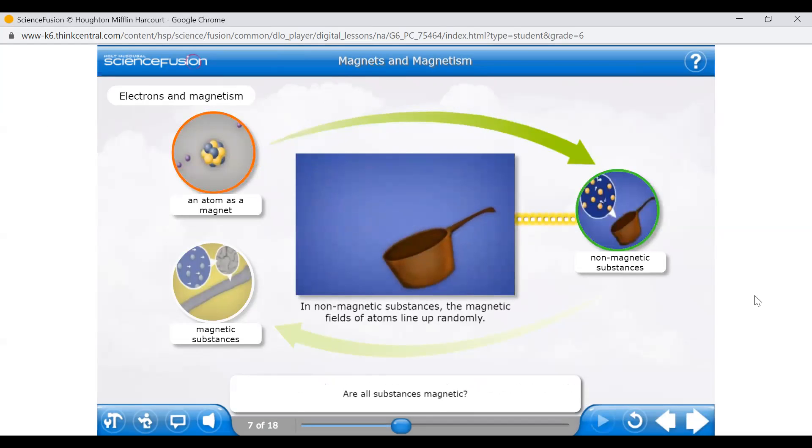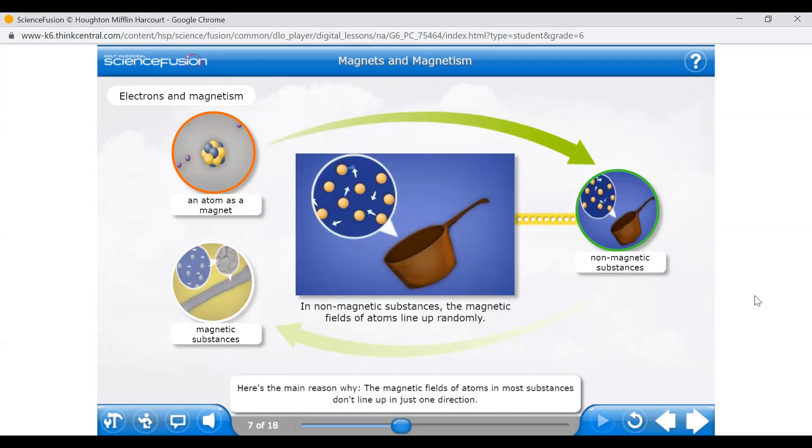Are all substances magnetic? No! Elements such as copper and aluminum are not magnetic. Here's the main reason why. The magnetic fields of atoms in most substances don't line up in just one direction. So, for a large sample of the substance, these tiny magnetic fields mostly cancel each other out, causing the substance to be non-magnetic.